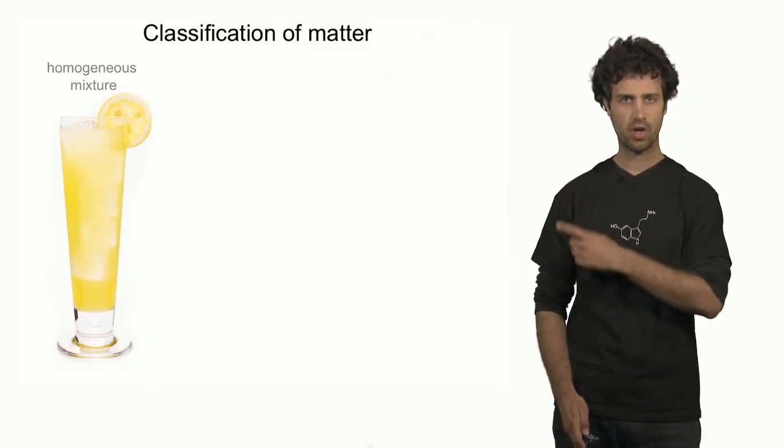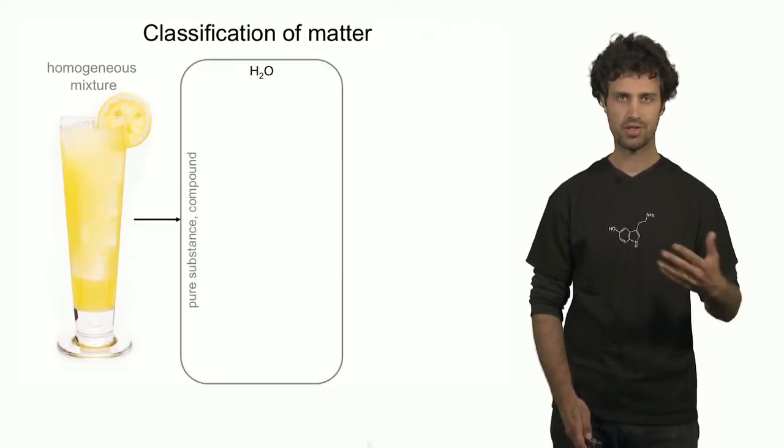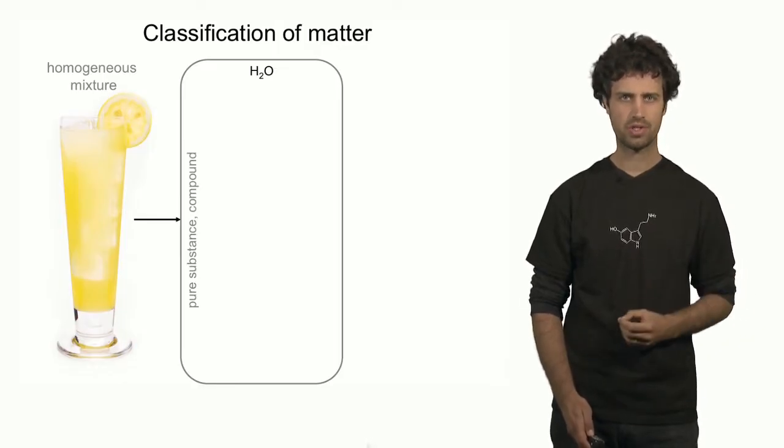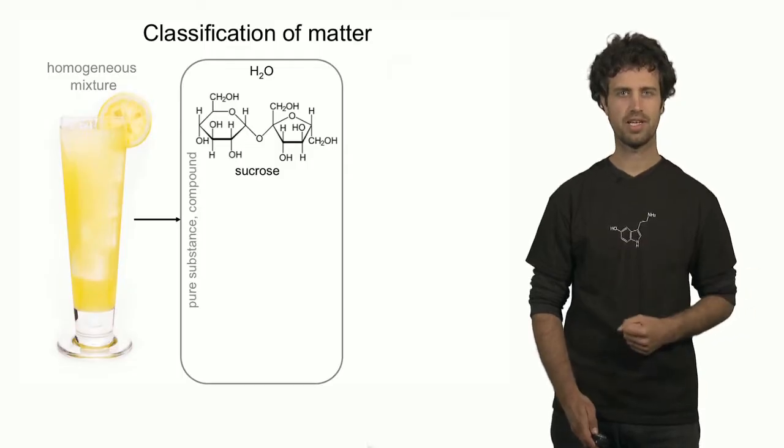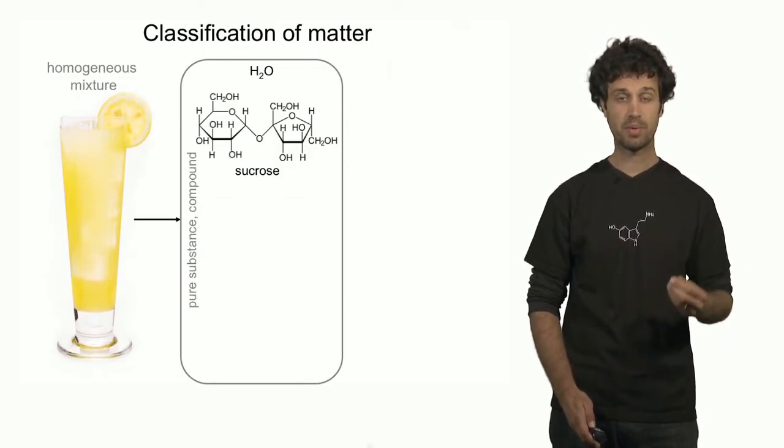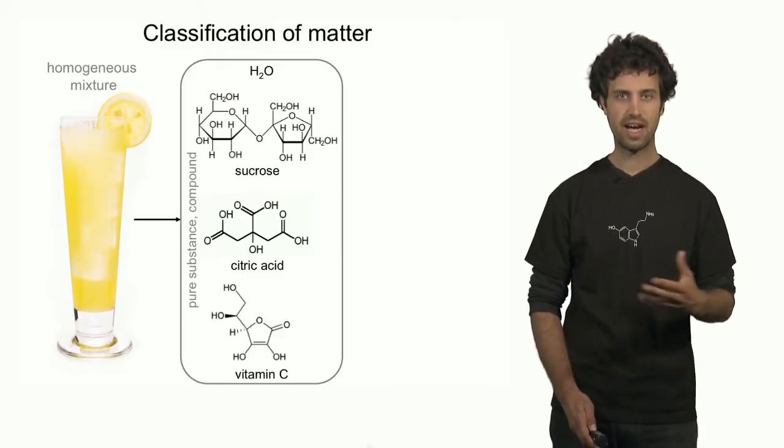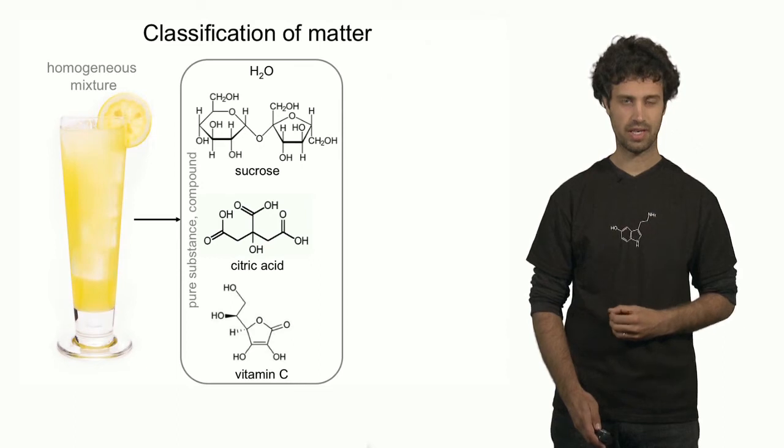Some of these ingredients are given over here. Water is an ingredient. Water is a pure substance. Another pure substance is sucrose. Sucrose gives the lemonade its sweet flavor. The acidic flavor derives from the presence of citric acid, another pure substance. Vitamin C is also present in the glass of lemonade. It is yet another pure substance.